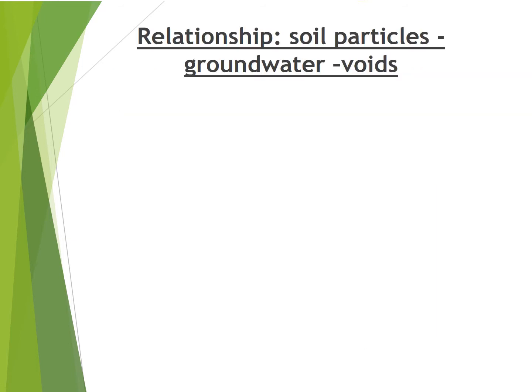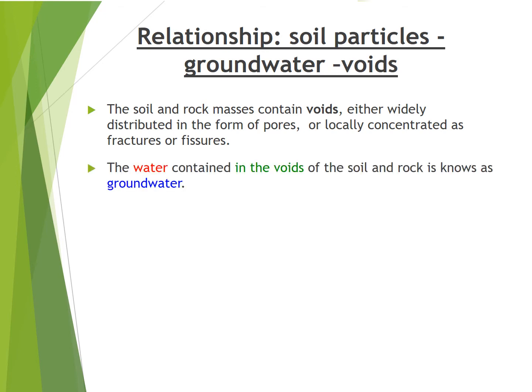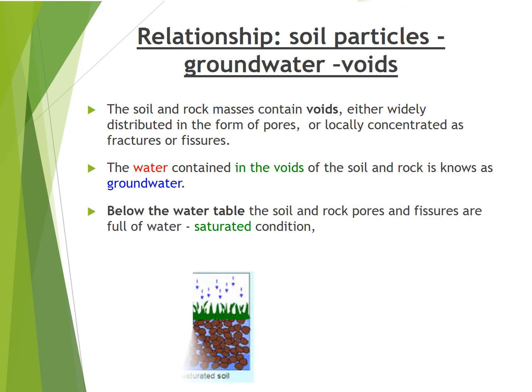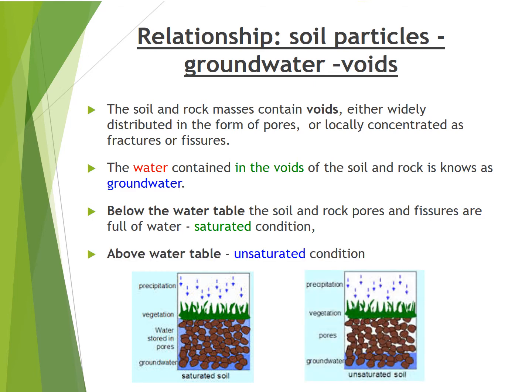What is the relationship between soil particles, groundwater, and voids? Soil and rock masses contain voids, either widely distributed in the form of pores, or locally concentrated as fractures or fissures. The water contained in the voids of soil and rock is known as groundwater. Below the water table, soil and rock pores and fissures are full of water — a saturated condition. Above the water table is called an unsaturated condition.